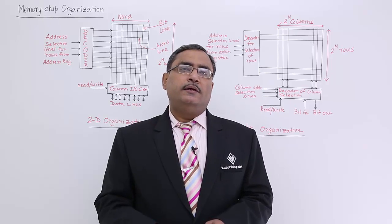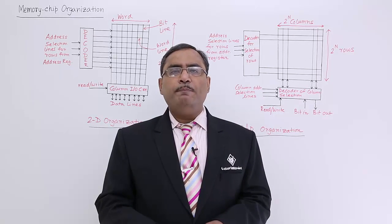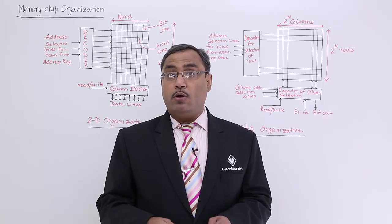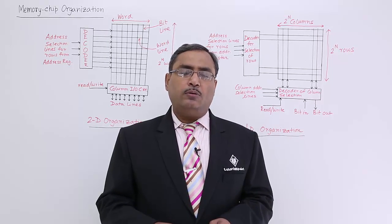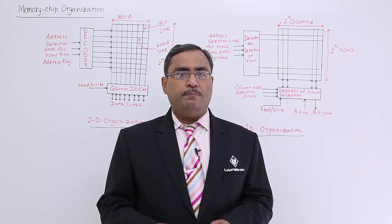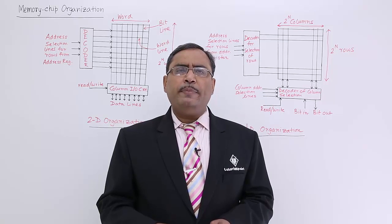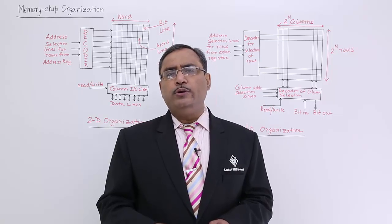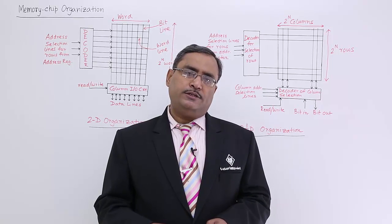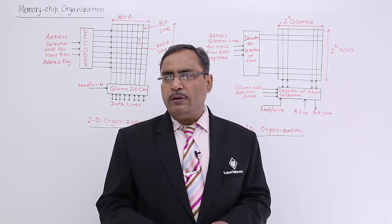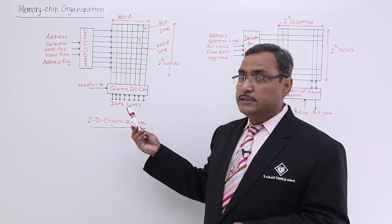This session's topic is memory chip organization — how memory, whether RAM or ROM, gets fabricated, and how chip organizations are made. We have two categories: one is the 2D organization and another is the 2.5D organization. I have suitable diagrams, and I shall discuss them one by one.